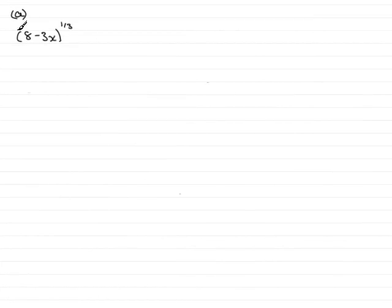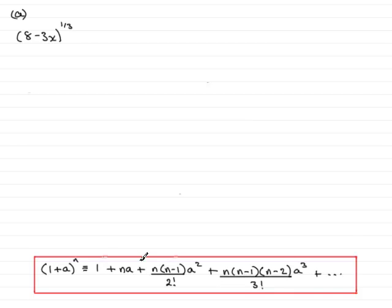Now in this question, we have to expand 8 minus 3x to the power 1/3 using the binomial expansion up to the term in x cubed. If you've forgotten the binomial expansion, here it is: 1 plus a to the power n is identical to 1 plus na plus n times n minus 1 over 2 factorial times a squared plus n n minus 1 n minus 2 a cubed over 3 factorial and so on.